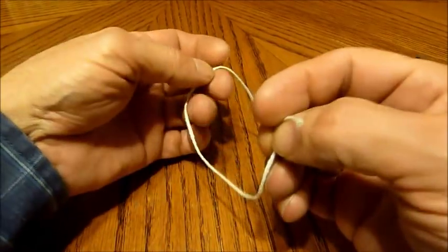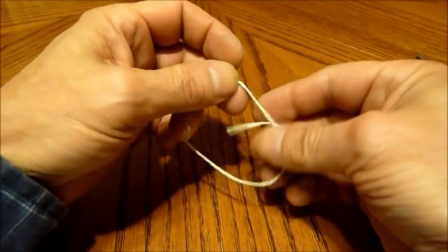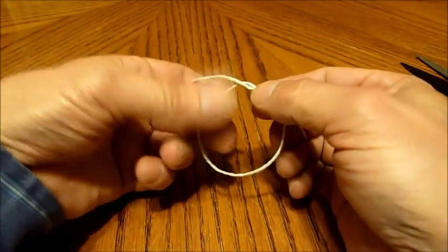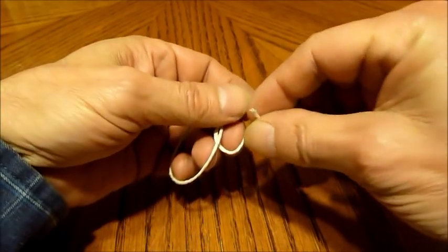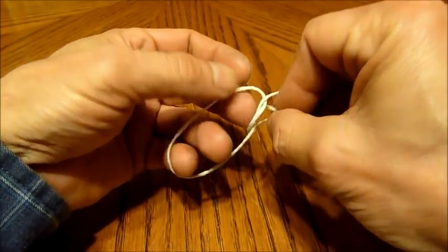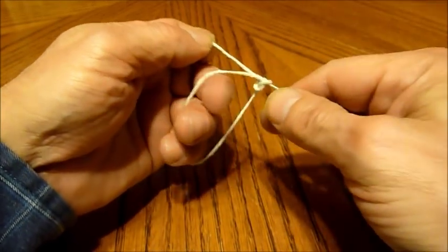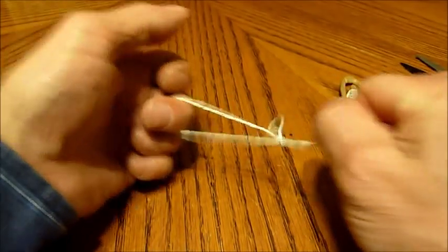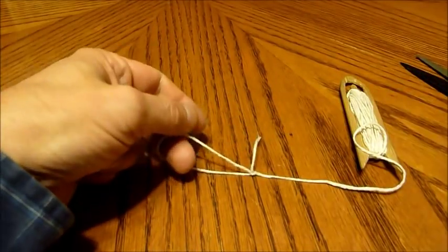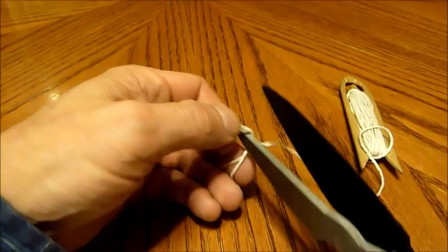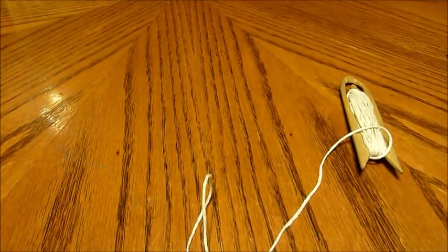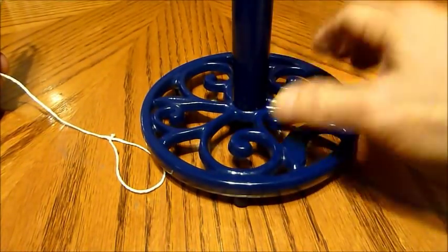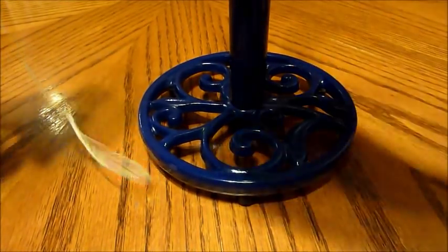To get started, you make a loop in the end of your string that's at least a little bit bigger than the netting needle with all its stuff on it. It's good to make that in a square knot so if you pull it tight it doesn't slip. I'm going to cut off this extra so it doesn't get in our way. Now you need some kind of anchor. I'm going to use this paper towel holder here.